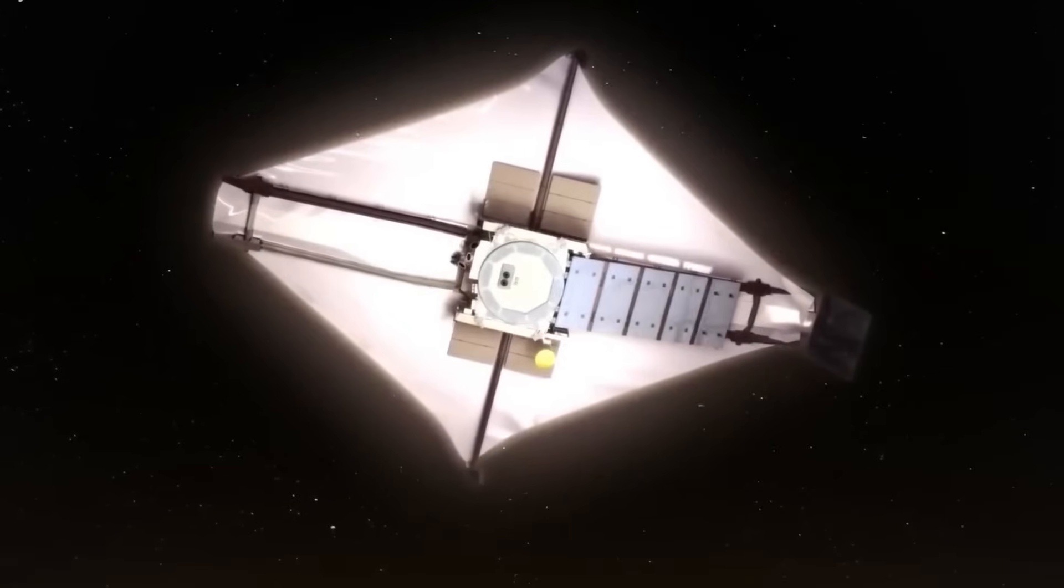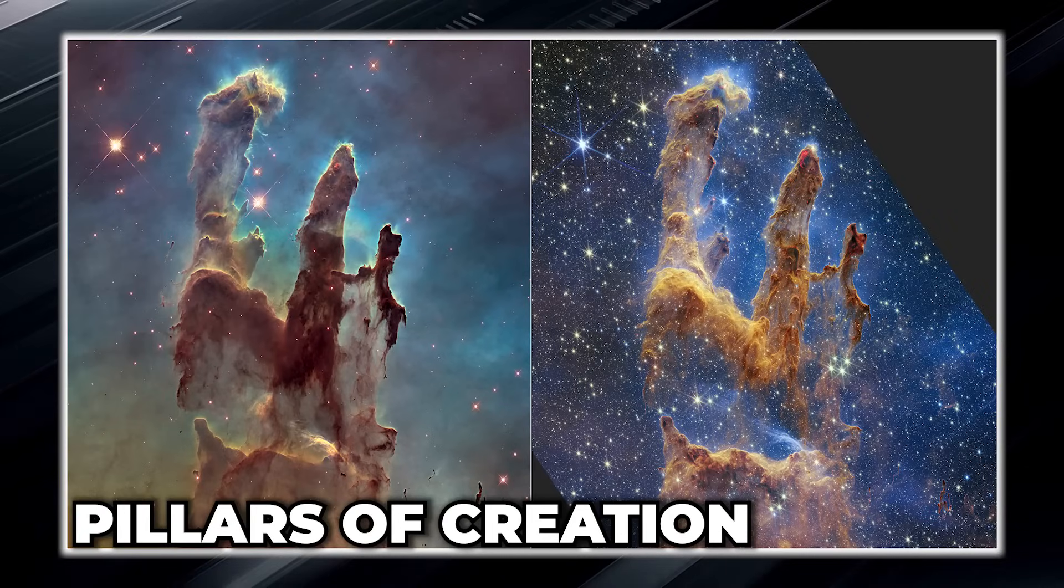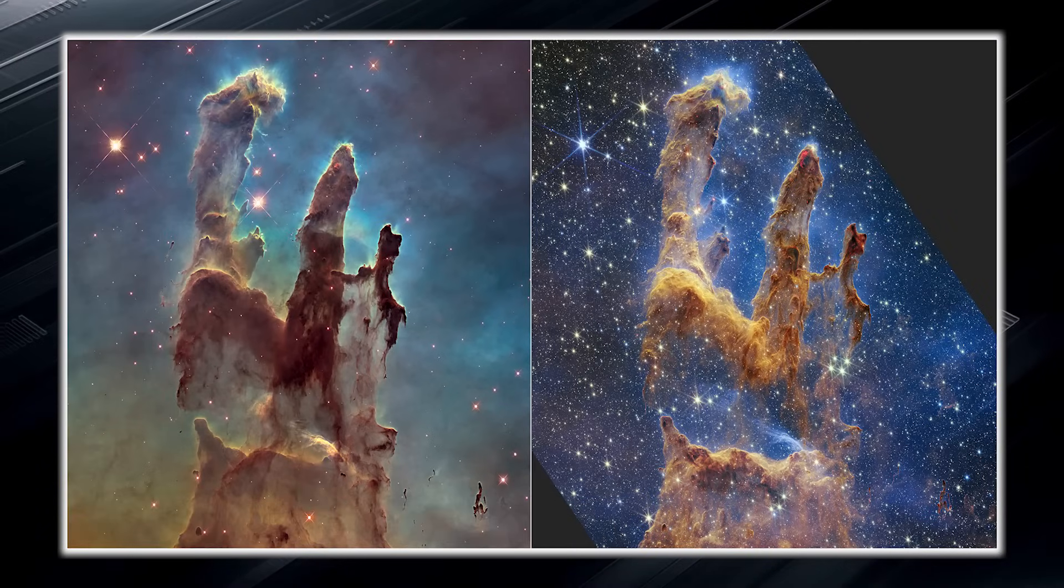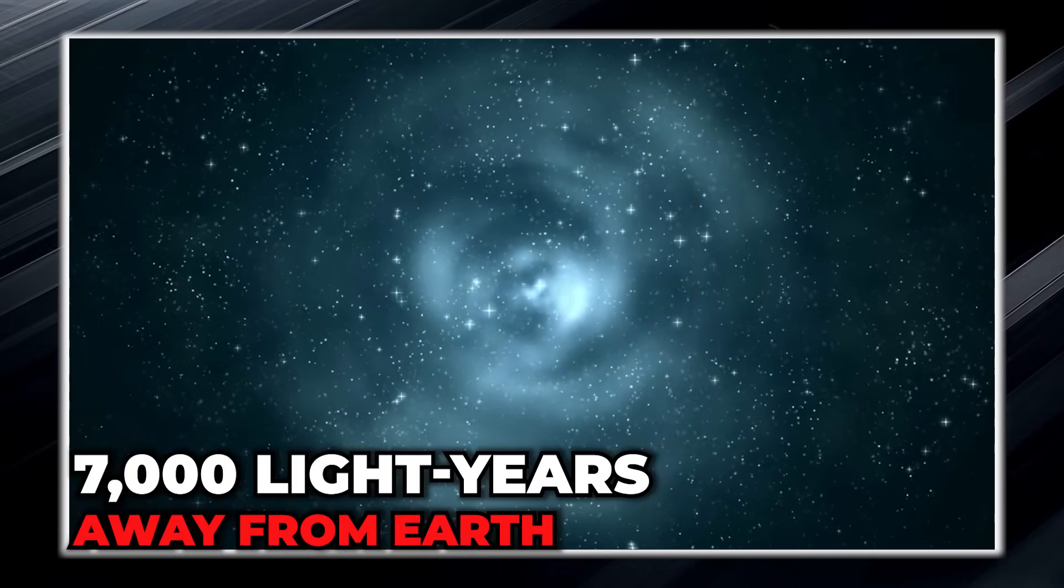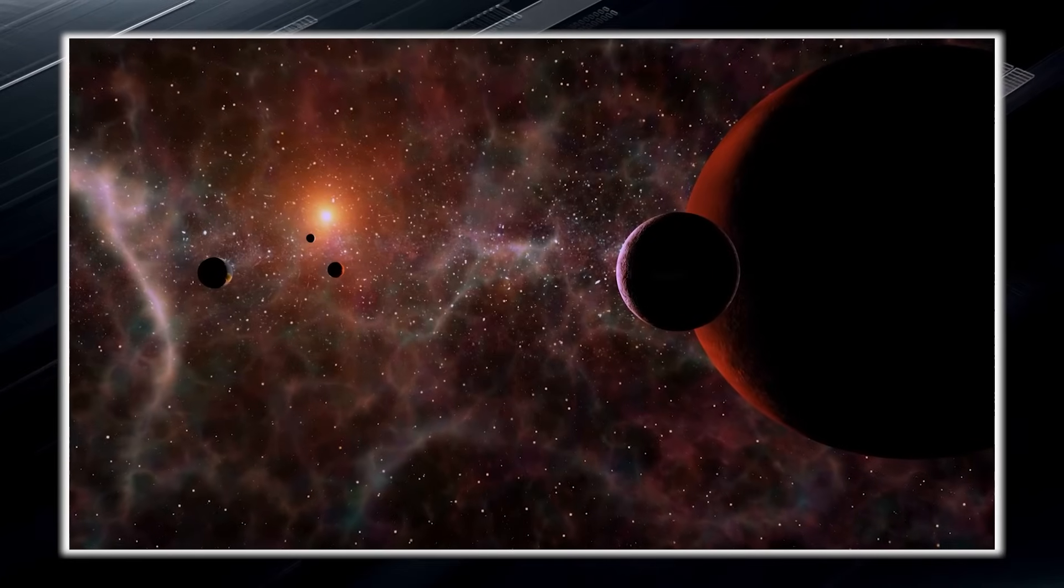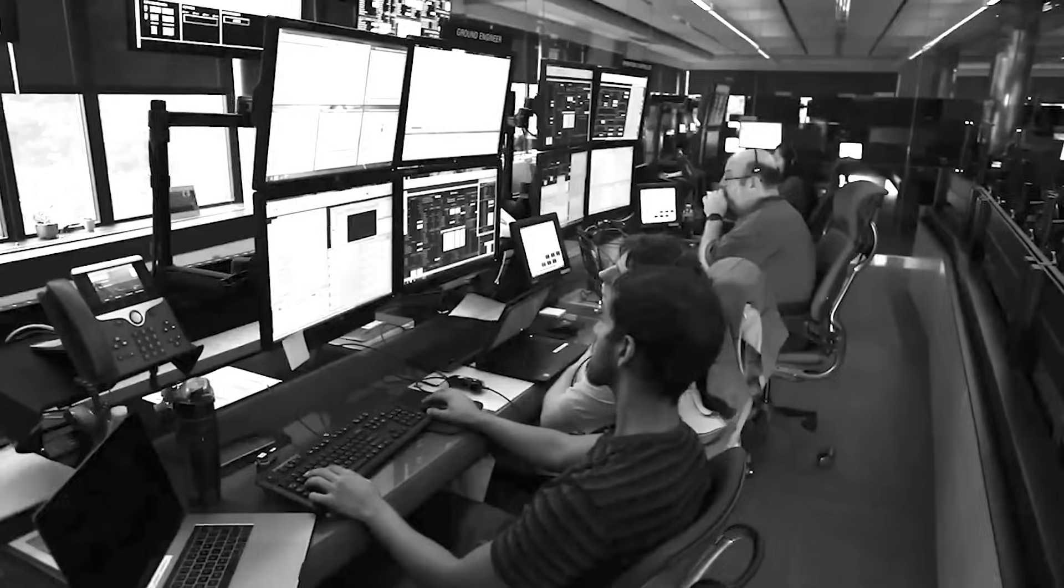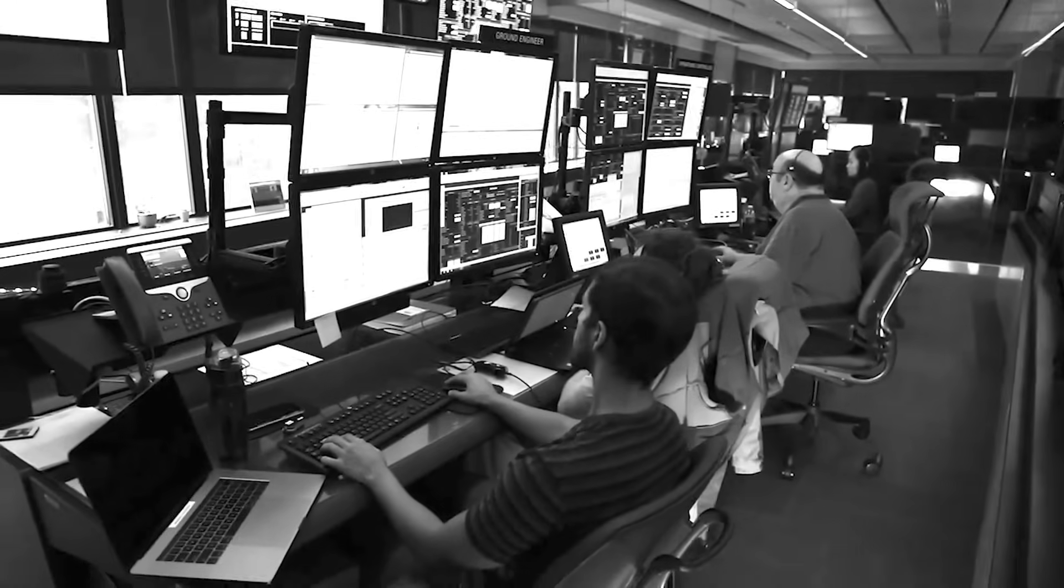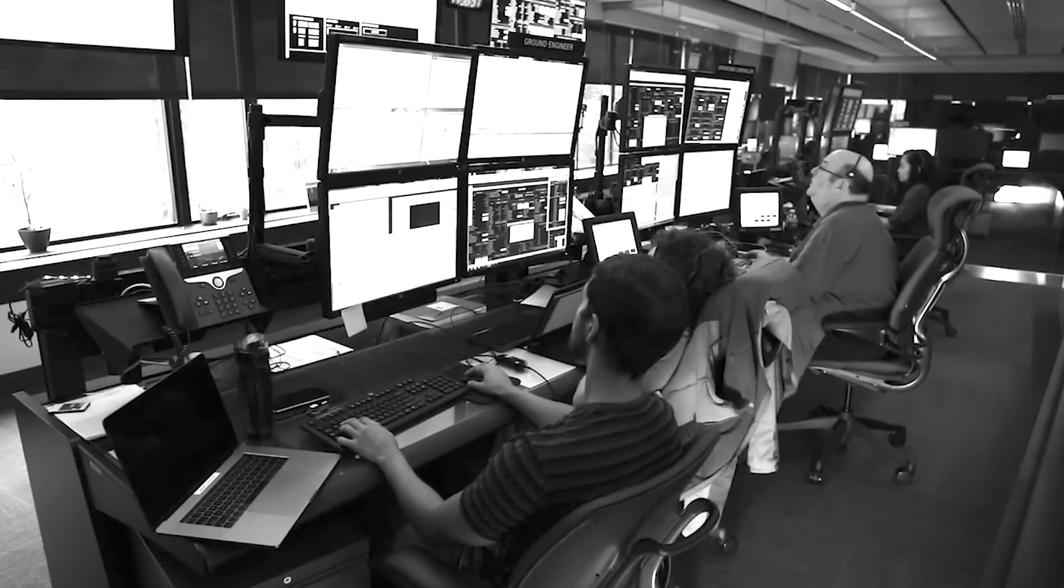When the James Webb turned its instruments toward the iconic Pillars of Creation, it captured the famous dust clouds in incredible detail. These pillars are located in the constellation Serpens, about 7,000 light years away from Earth. The Pillars of Creation are part of the Eagle Nebula, large clouds of gas and dust that were first photographed by the Hubble Space Telescope in 1995. Since then, the extraordinary beauty of the pillars has been revealed.